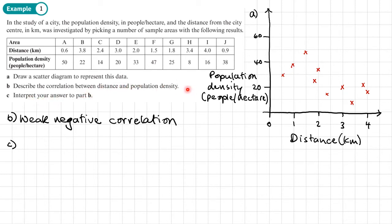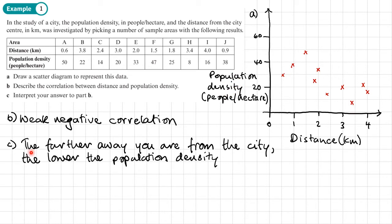This is now in terms of the question. Part C could say, write down the relationship between the distance and the population density. So looking at this, the further you live away from the city, the lower the population density. Or you could say the opposite to this, and say that the closer you are to the city centre, the higher the population density.